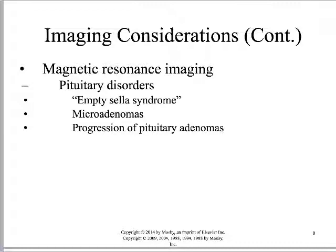With MRI you have a double bind — gadolinium is something we're finding should not be used on every patient. Gadolinium can stick around in the body, and if the protective coating placed around it wears off, you now have a heavy metal circulating in your body. It's basically like injecting someone with lead. The other consideration with MRI is if the patient has any metal in their body, which can create limitations to the study or possibly even cause a hazard to the patient.